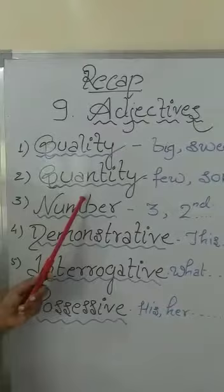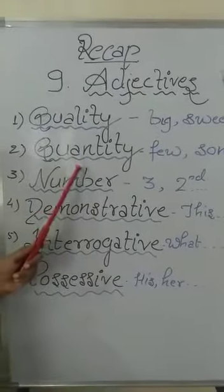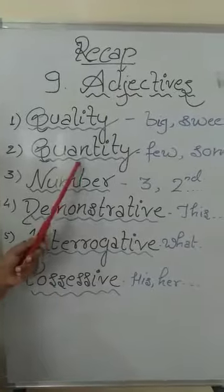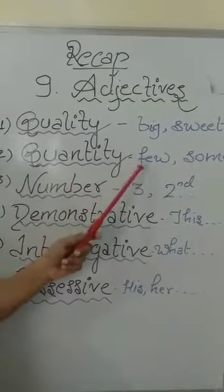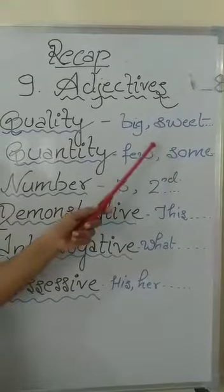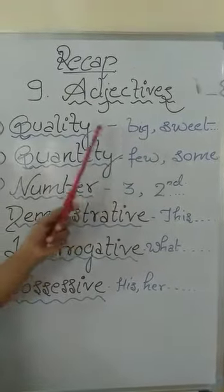Second is adjective of quantity. The question asks, how much? Examples are few, some, many, little and so on.